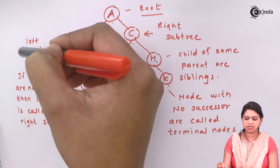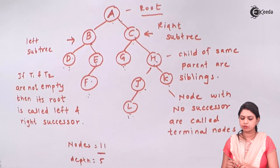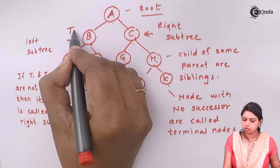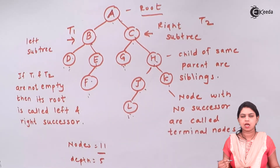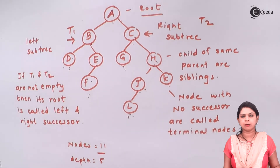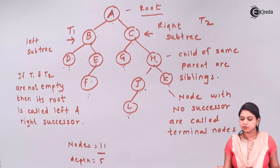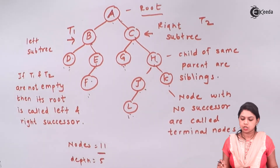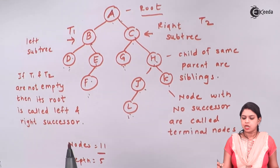T1 and T2 are called the left subtree and right subtree. If T1 and T2 are non-empty, they are called the left successor and right successor. In this diagram both T1 and T2 are non-empty, so we call them left successor and right successor. This binary tree has a total of 11 nodes.